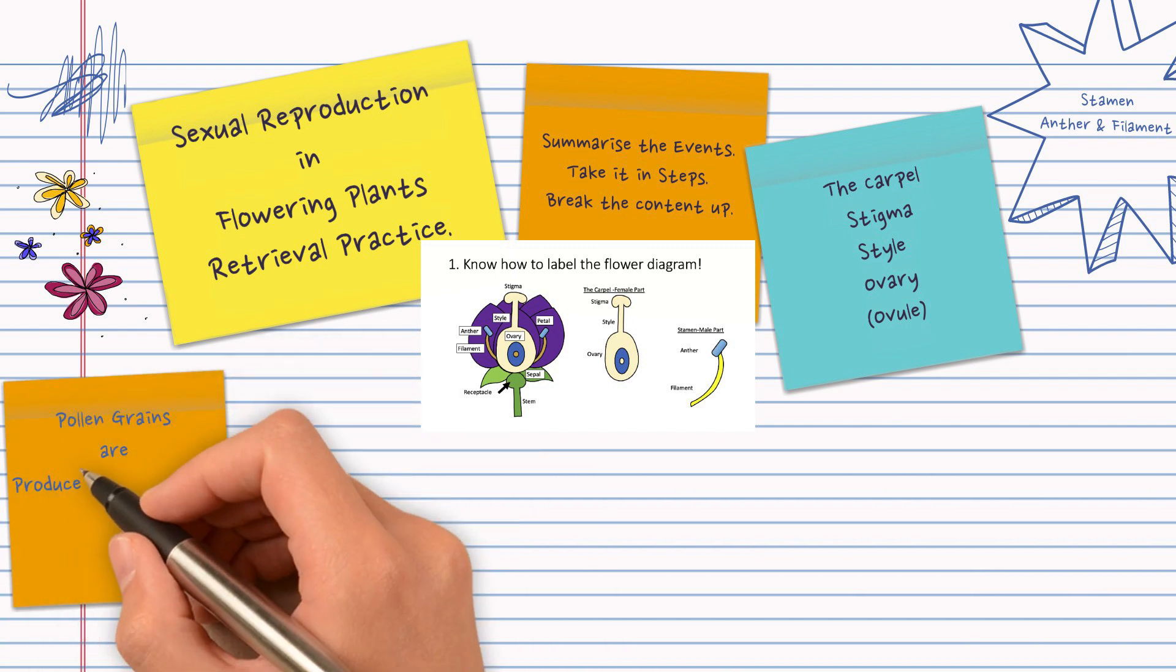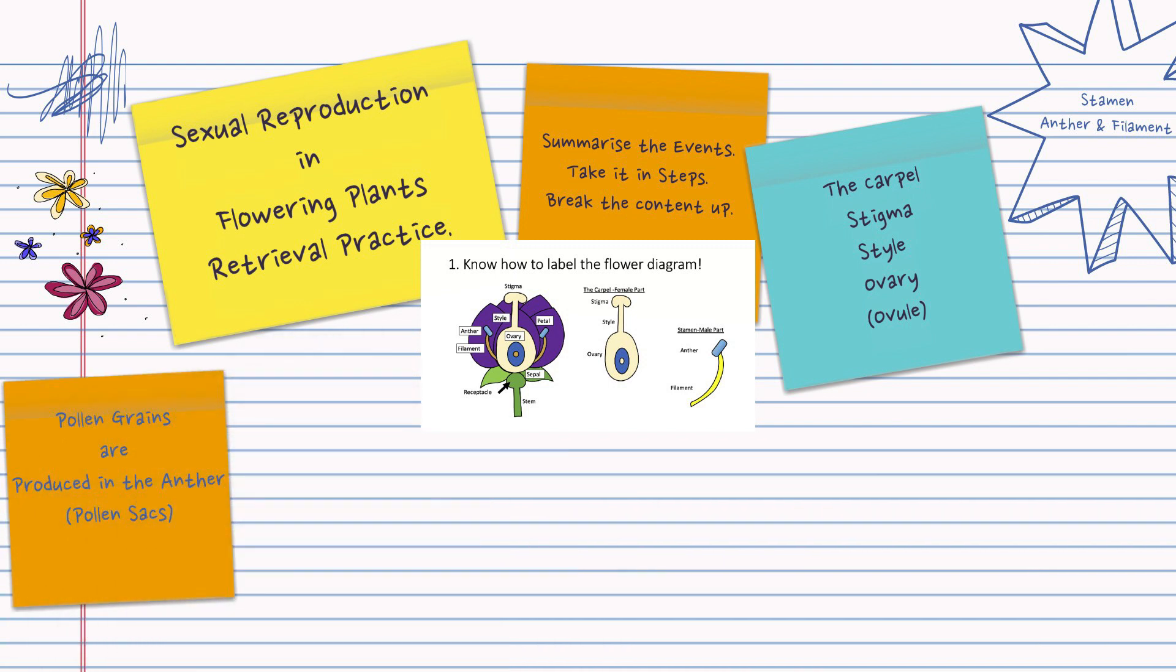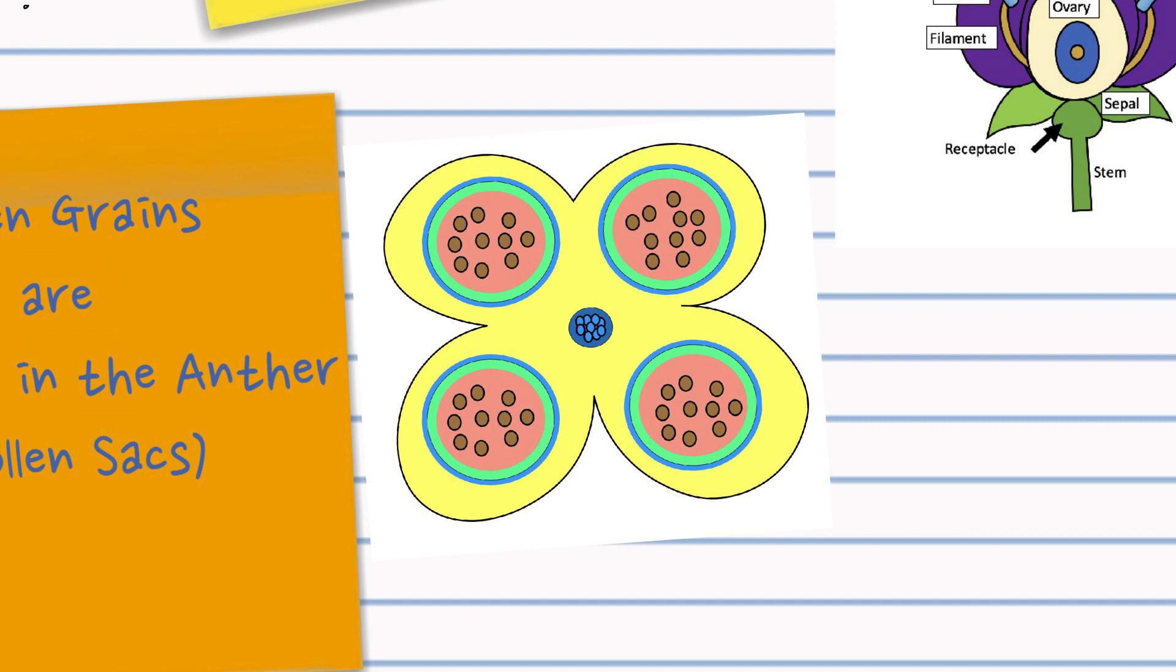So next we're going to discuss pollen grains and know that they're produced in the anther, in those chambers there known as pollen sacs.